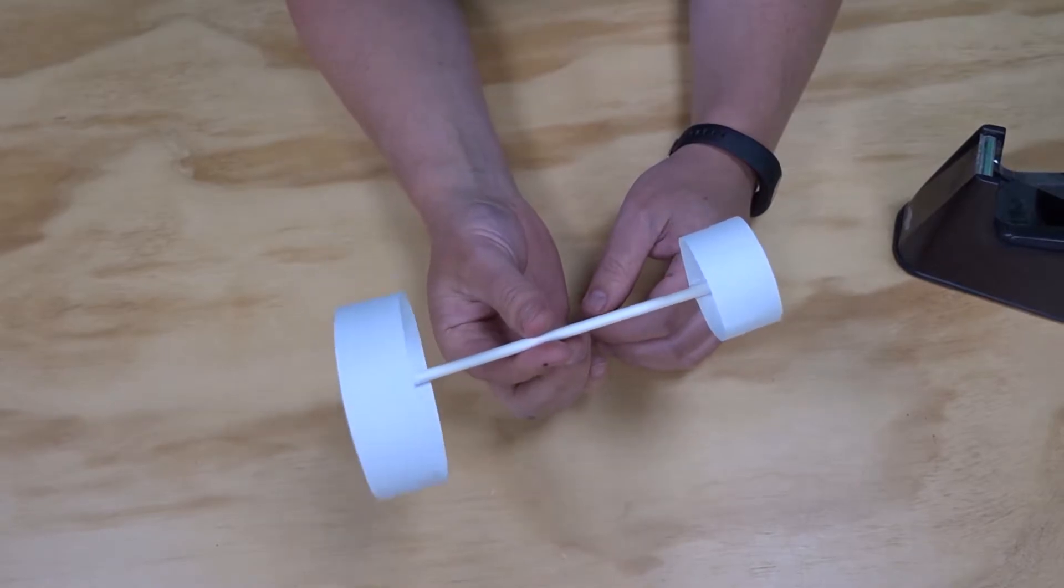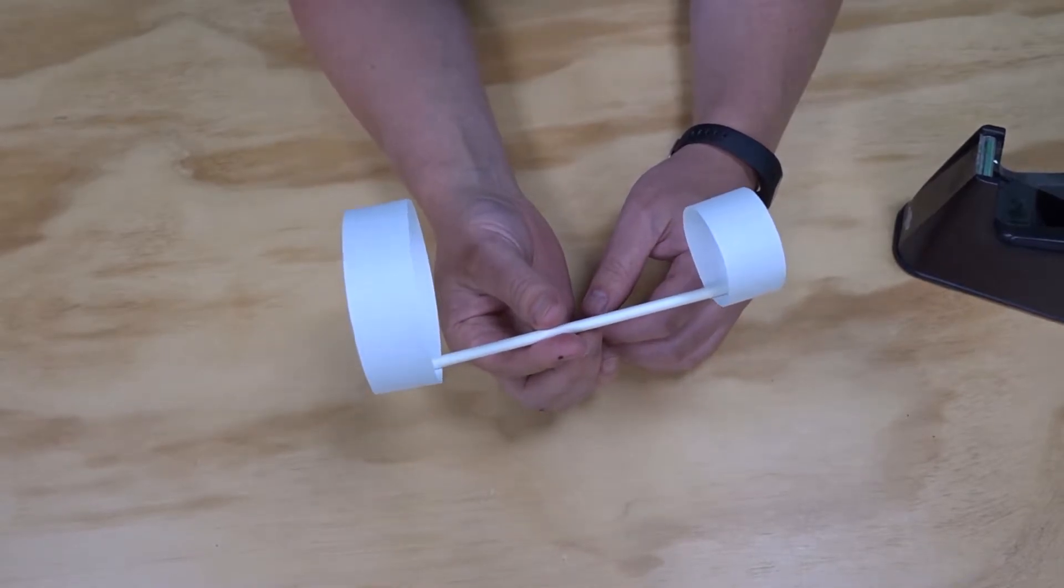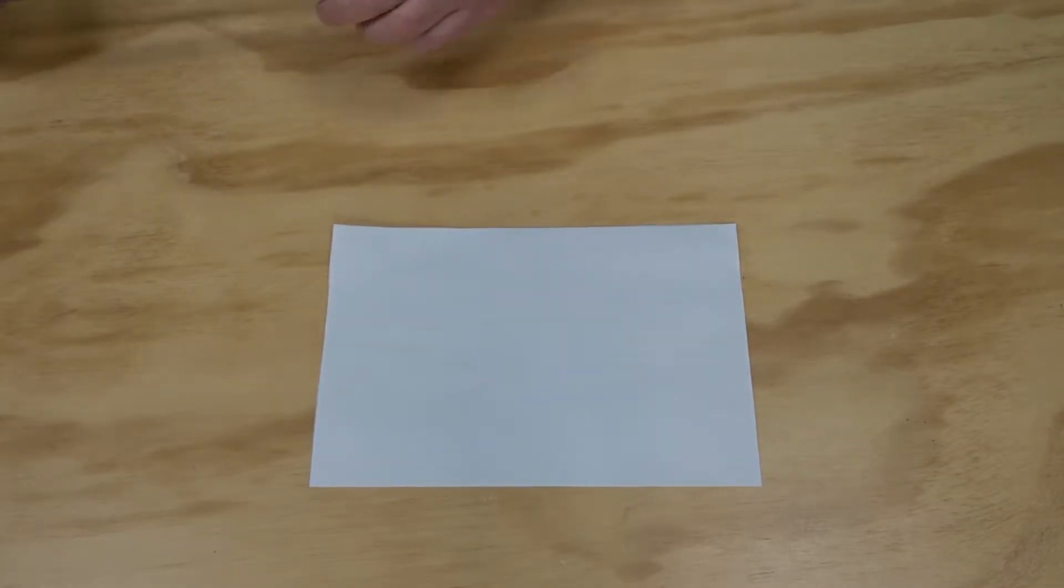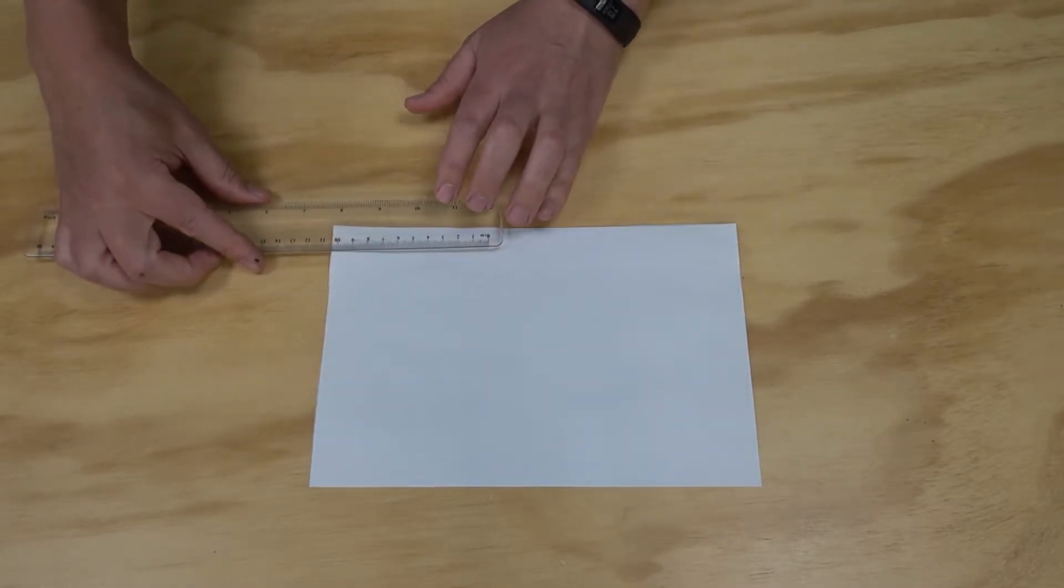Before we test this out, we're going to try our second one, which is going to be a paper rocket. To make our paper rocket, I'm going to use the same piece of leftover paper. This time I'm going to cut a strip that's ten centimeters wide.